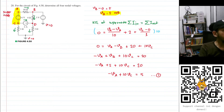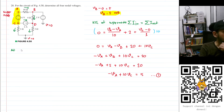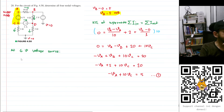From the voltage source, we can derive another equation. The 6-volt voltage source gives us: VA minus VC equals 6 volts. This is Equation 2.